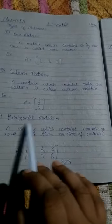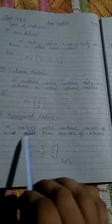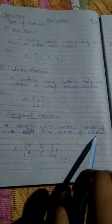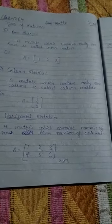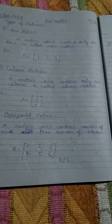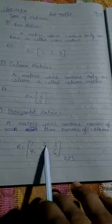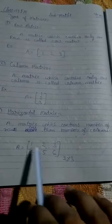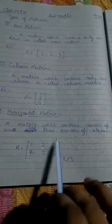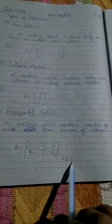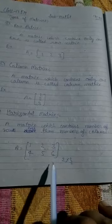Next, horizontal matrix. A matrix which contains number of rows less than number of columns. For example, A = [1 2 3; 4 5 6]. Here, two rows and three columns. So 2 is less and 3 is greater, so it will be called horizontal matrix.